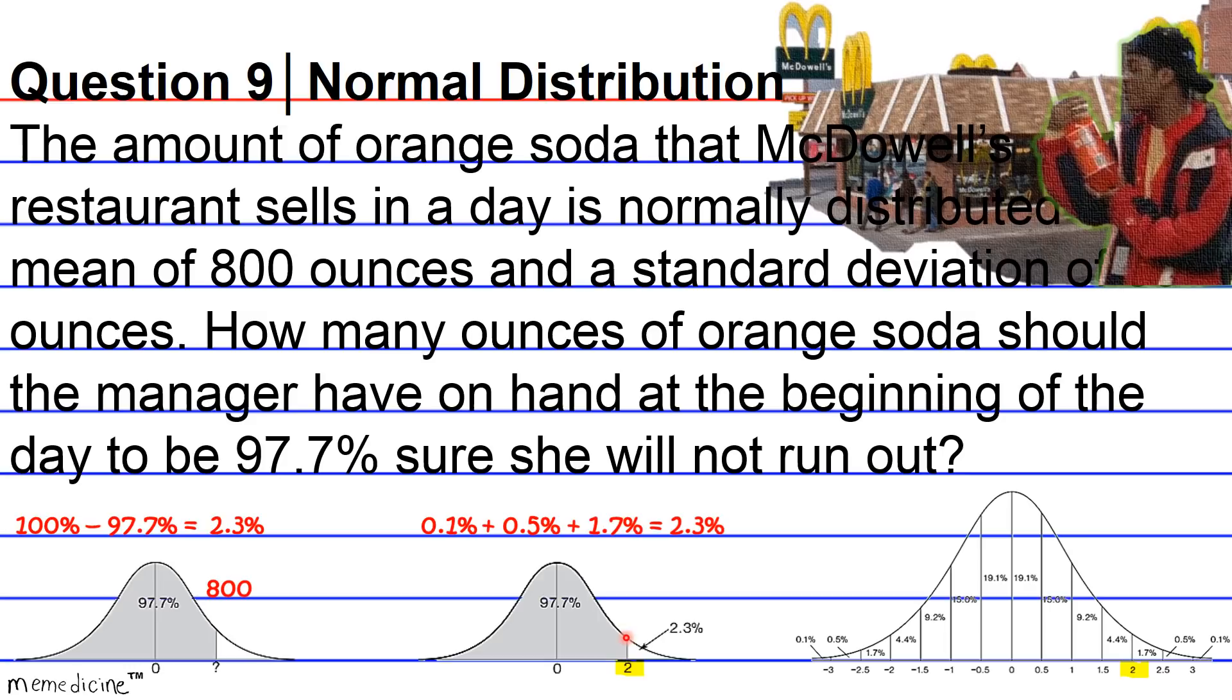So moving right along, two standard deviations above the mean is going to be 800 plus 2 times our actual standard deviations, which we're told is 60—if you recall earlier, we were told the standard deviation is 60—so 2 times 60, or 920 ounces. So she has to have 920 ounces on deck to be exactly 97.7% sure that she won't run out.